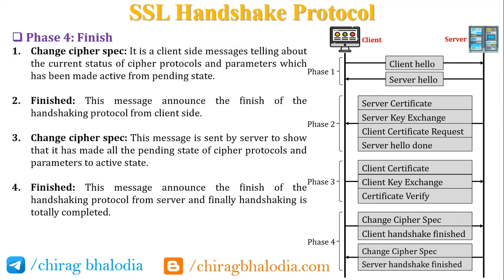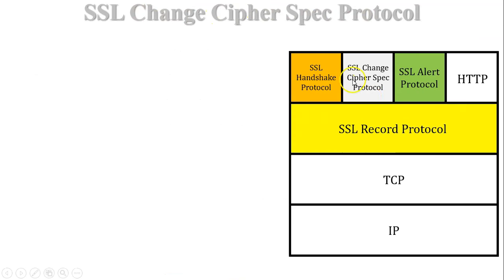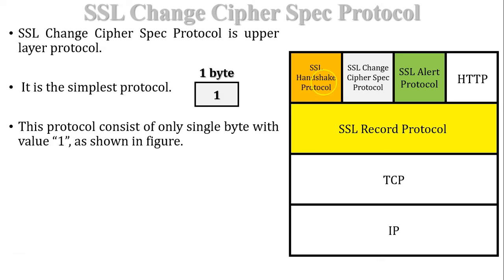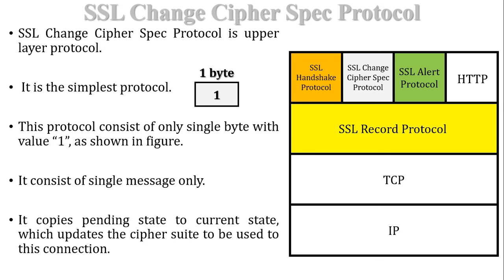The next higher-level protocol is SSL Change Cipher Spec Protocol, also called an upper layer protocol in SSL architecture. This protocol is the simplest among all SSL protocols. It consists of only a single byte with value 1. So SSL Change Cipher Spec Protocol occupies only 1 byte and consists of a single message. Its purpose is to copy the pending state into the current state, which updates the cipher suite to be used for the connection.